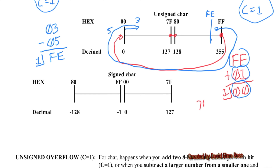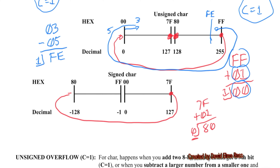Looking at 7F plus 1, we get 80 with no carry. On the unsigned line, carry is 0, so it's a valid result. However, on the signed line, we started with 7F — the most positive number — added 1, and ended up as far in debt as we can go. Because a positive is added to a positive, you'd expect a positive result, but it's negative. So for signed numbers, if you add two positives and don't get a positive, that means you have a signed overflow — V equals 1.